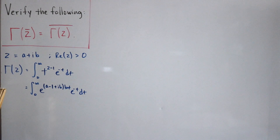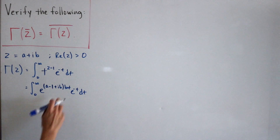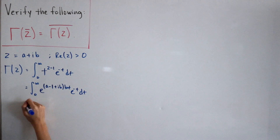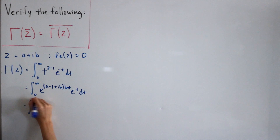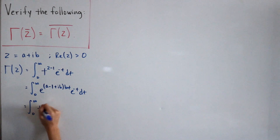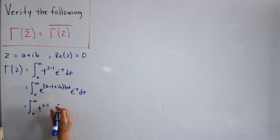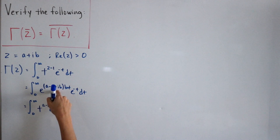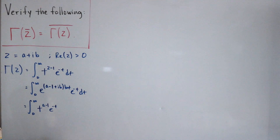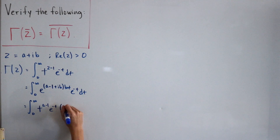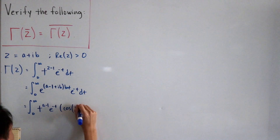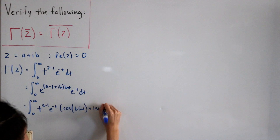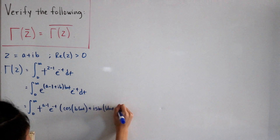Expanding further, we distribute the ln(t) and separate the real and imaginary parts. We get the integral from zero to infinity of t to the power a minus 1 times e to the negative t, times e to the power i times b times ln(t). Applying Euler's formula, this becomes cosine of (b ln t) plus i times sine of (b ln t), dt.